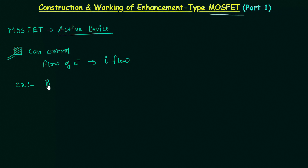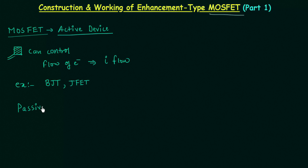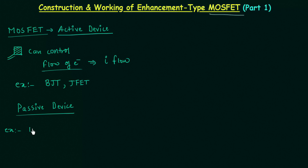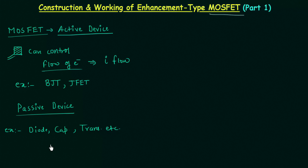Few examples of active devices are bipolar junction transistors, junction field effect transistors, and MOSFET. On the other hand, the circuit component with no ability to control the flow of electrons is known as a passive device. Few examples are PN junction diode, capacitors, transformers, etc. These devices cannot control the flow of electrons.